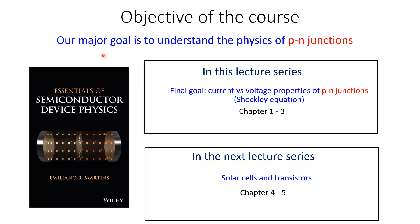Our major goal is to understand the physics of PN junctions. To do that, we're going to cover chapters 1 to 3 of the textbook. Chapter 1 gives the necessary background, chapter 2 describes the physics of semiconductors, and chapter 3 describes the physics of PN junctions, which leads to the famous Shockley equation, which we will derive in this course.